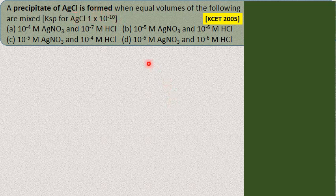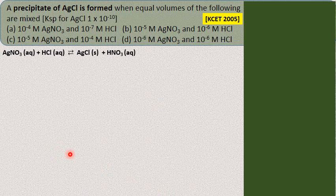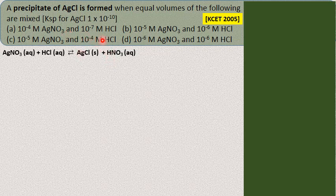From this data, you have to find out which concentration will make silver chloride come out easily. How does the reaction take place? The reaction is between silver nitrate and HCl, giving silver chloride precipitate with the formation of nitric acid. Now we have to find out which concentration is ideal to get silver chloride easily from the mixture.